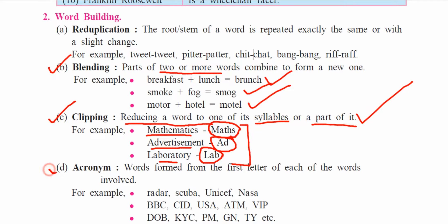The fourth process is acronym — a word formed from the first letter of each of the words involved. It is also called truncation. Examples include: Radar, SCUBA, UNICEF, NASA, BBC, CID, USA, ATM, VIP, KYC, PM, and TY.